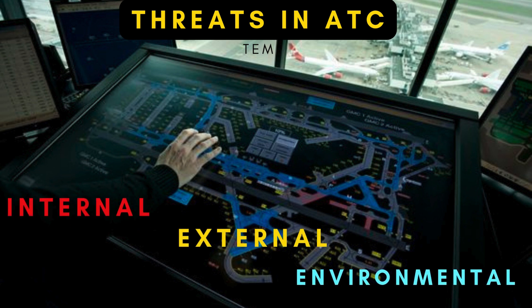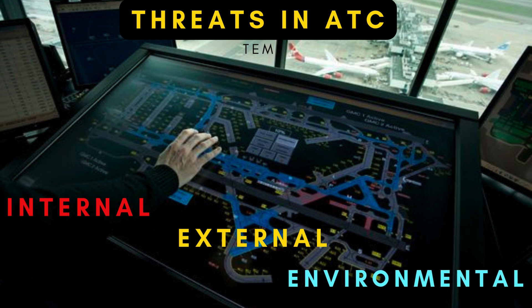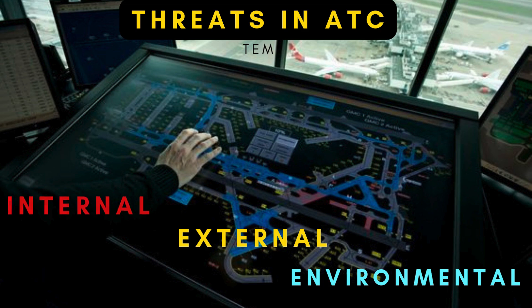In ATC, threats come from various sources. Internal threats are issues within the control environment, like equipment malfunctions or procedural difficulties. External threats are factors outside the controller's immediate influence, such as complex airspace design, challenges coordinating with other sectors, pilot errors, or unusual aircraft performance. Environmental threats, like bad weather, airspace reservation, terrain, and obstacles, add further complexity to an already demanding job. While threats cannot be eliminated, being aware of them allows controllers to manage their impact and prevent escalation into dangerous situations.